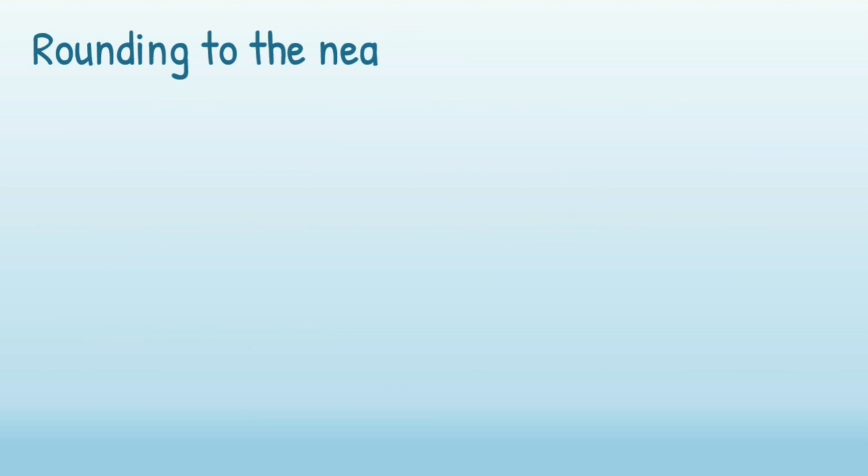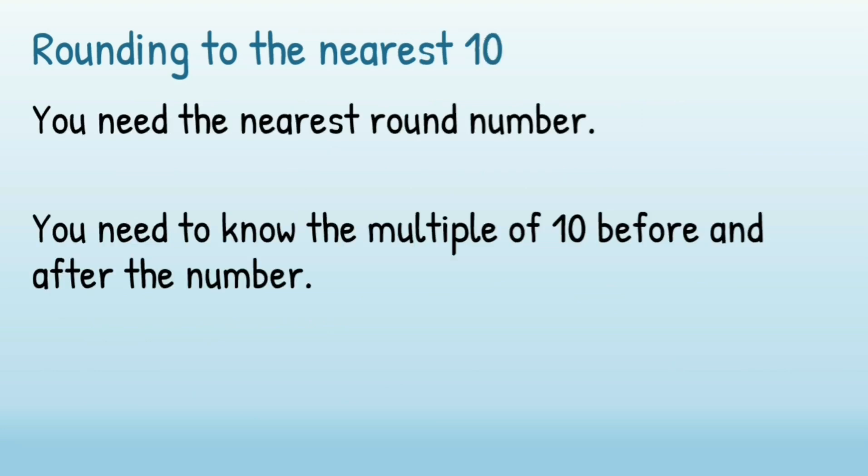Let's start by looking at rounding to the nearest 10. You're trying to get to a round number. When you're rounding to the nearest 10, you need to know the multiple of 10 that comes before and after the number so that you can decide which multiple of 10 is closer.